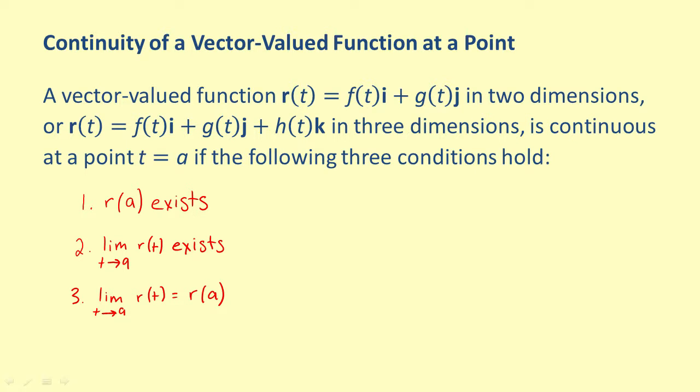One at a time we will need to check that each of these conditions is satisfied. If any one of these conditions fails to be true, the vector-valued function is not continuous at the point t equals a.